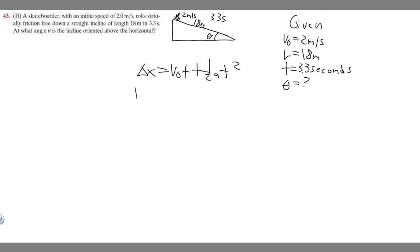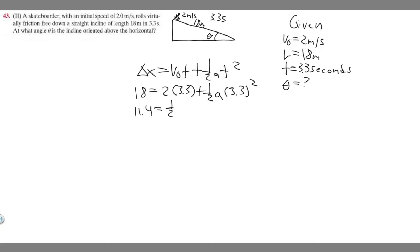So let's plug everything in. 18 equals v₀, which is 2, times t, which is 3.3, plus one-half a times 3.3 squared. 2 times 3.3 is 6.6 — move it to the other side. So 18 minus 6.6 is 11.4, which equals one-half times a times 3.3 squared. Multiply both sides by 2, and you get 11.4 equals 5.445a.